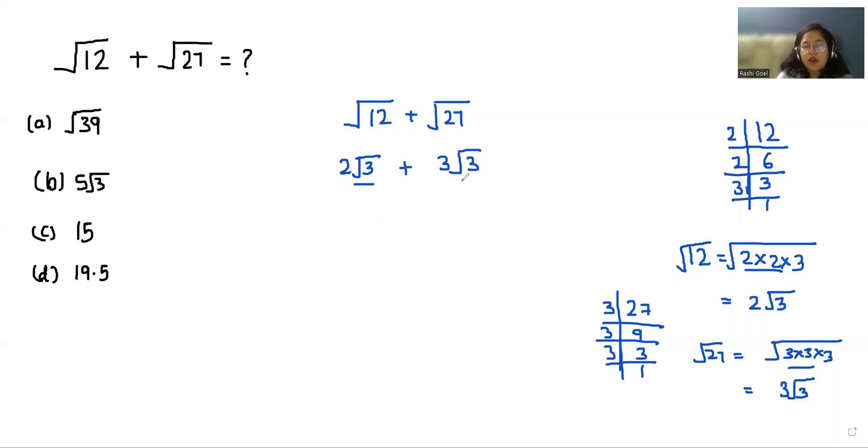Now both square roots have 3 under them and there's an addition sign. So we add the numbers. That is 2 plus 3 is 5, and we write the square root value. So the final answer is 5 root 3.